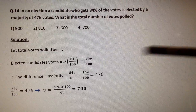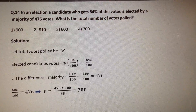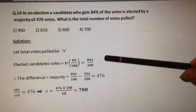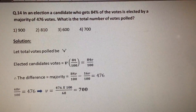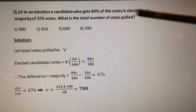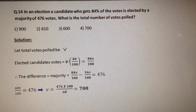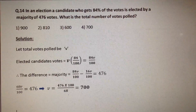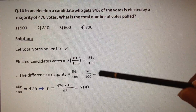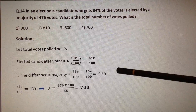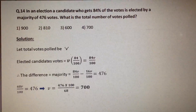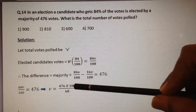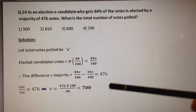Let the total votes polled be V. Therefore, the elected candidate's votes is equal to 84V by 100. When the elected candidate gets 84% of the votes, the other candidate gets 16% of the votes. Therefore, the difference, which is the majority, is equal to 84V by 100 minus 16V by 100, which is given as 476. Therefore, 68V by 100 equals 476, and V is equal to 476 into 100 by 68, which is equal to 700.